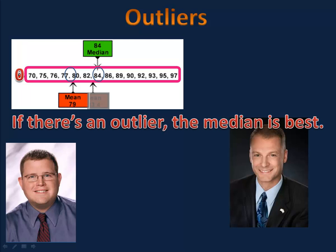If there's an outlier, it turns out the median is the best way to describe your data. And so we'll tell Mr. Weller that the test scores were right around 84.